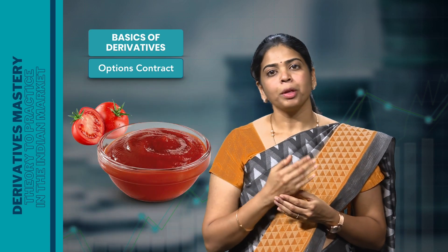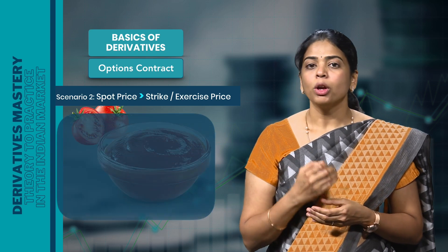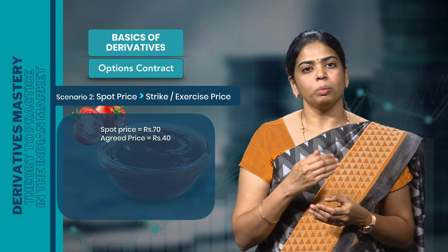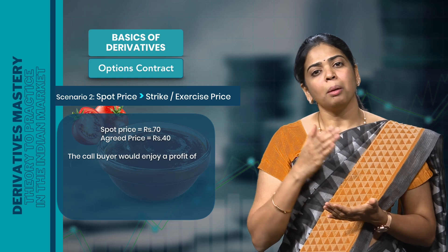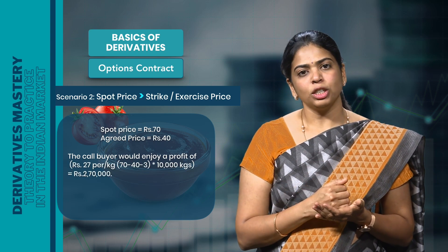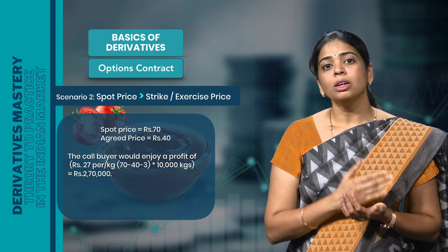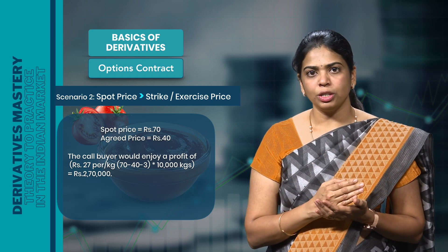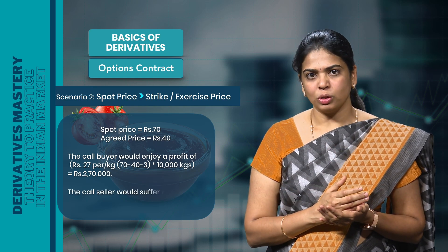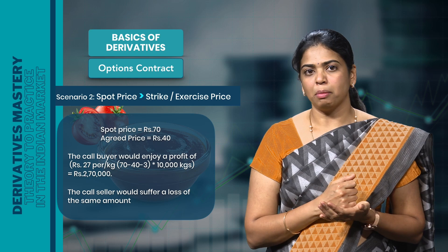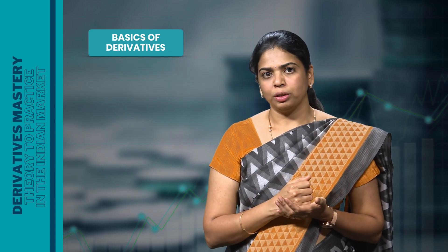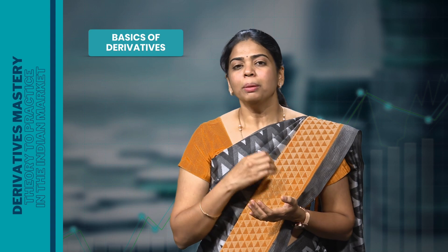In scenario 2, the spot price is more than the strike price. If the spot price on expiry is Rs 70 per kg and the agreed price is Rs 40 per kg, this situation favours the buyer of the underlying asset. Therefore, the call option buyer — the ketchup company — would demand the call seller — the trader — to fulfil the contract. The call buyer enjoys a profit of Rs 27 per kg × 10,000 kgs = Rs 2,70,000, while the call seller suffers a loss of the same amount. If the trader as the seller of the underlying asset would like to enjoy an option, he has to buy a put option, which gives the seller the right but not the obligation to sell.